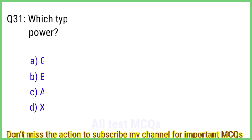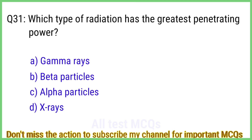Question number 31. Which type of radiation has the greatest penetrating power? The right answer is option A: Gamma rays.